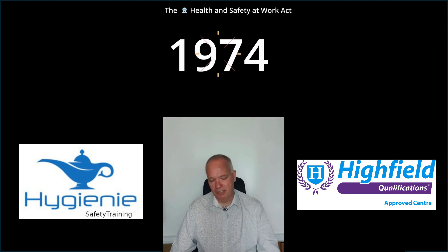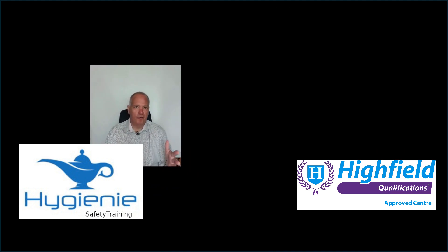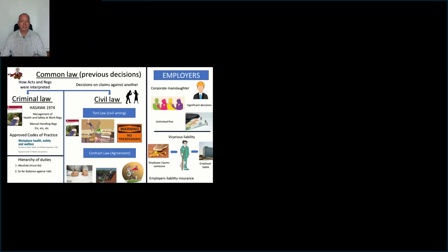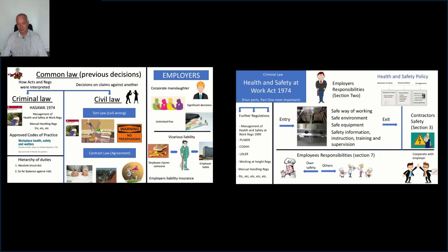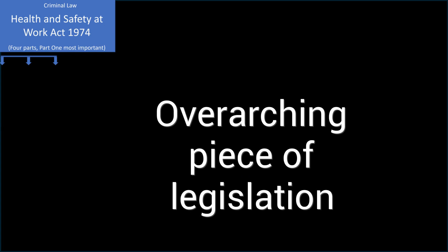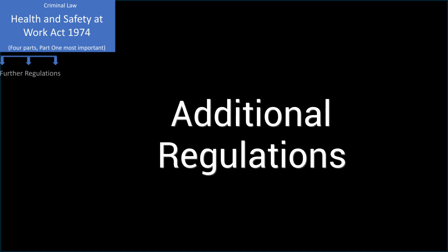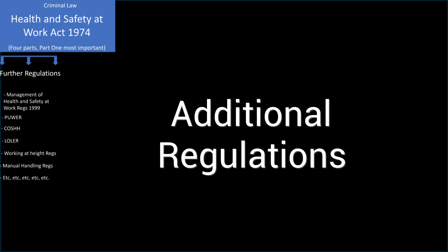Health and Safety at Work Act 1974. Following on from legislation, this lesson will examine one act contained within criminal law: the Health and Safety at Work Act 1974. This is the main overarching piece of legislation in this country. It's an enabling act, meaning additional regulations — for example, manual handling, working at height, etc. — are made within this framework.